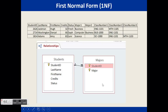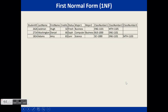Let's look at the relationships view of these tables. Student ID is the key of the students table, and student ID and major together form the combination key of the majors table, with a one-to-many relationship — a student may have several majors. There's another improvement to be made to this data to reach first normal form. Can you find it?